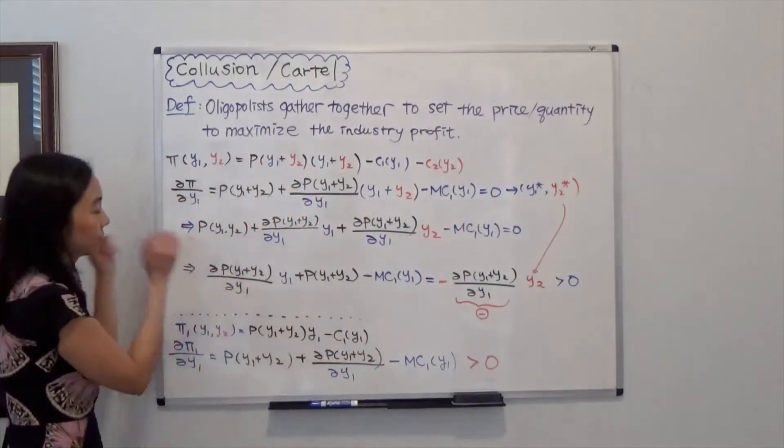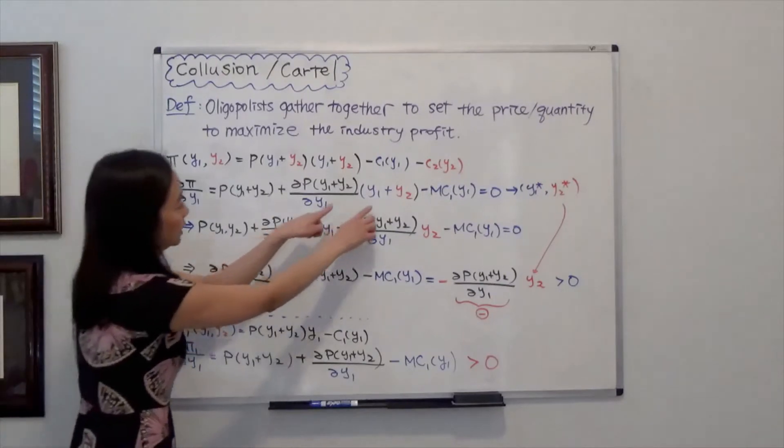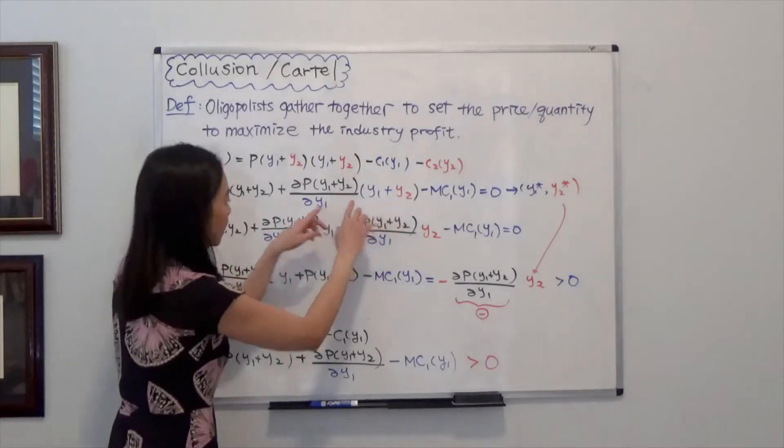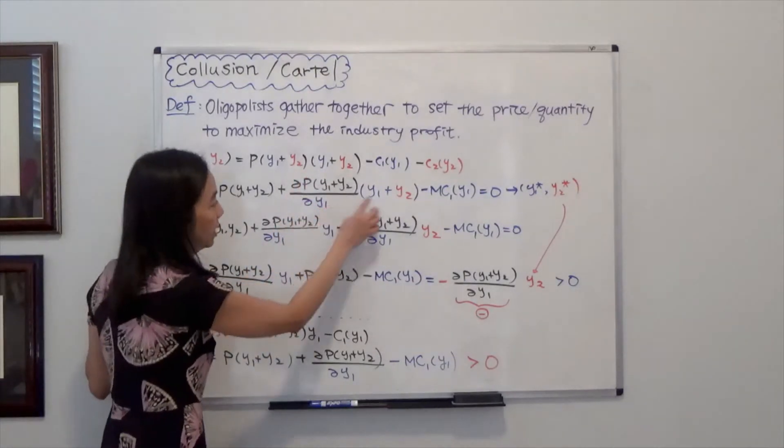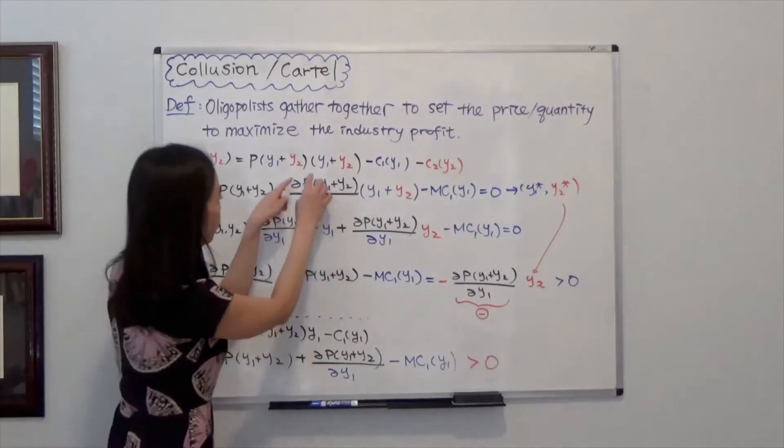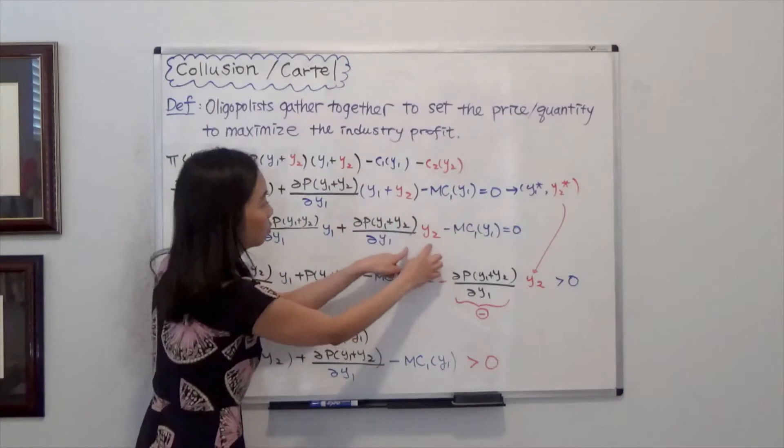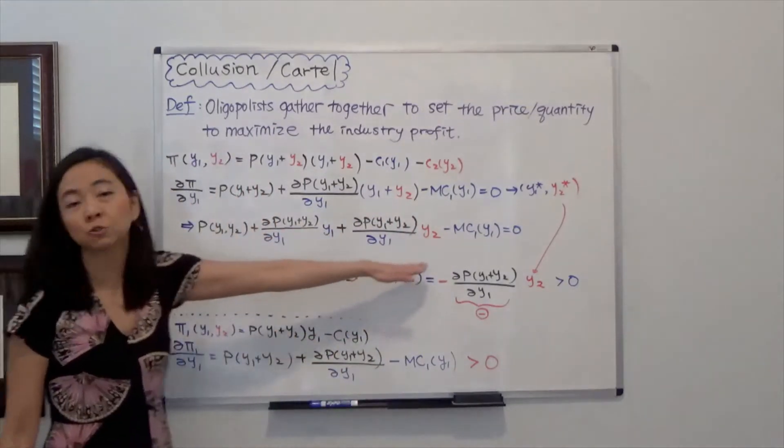Next, I am going to multiply out this term, and everything else is going to remain the same. We have partial pi, partial Y1 times Y1, and partial pi, partial Y1 times Y2 here. Everything else remains the same.